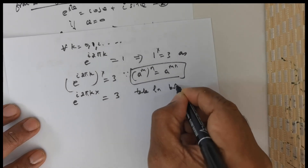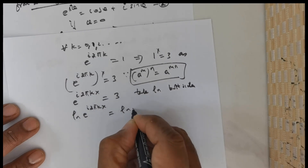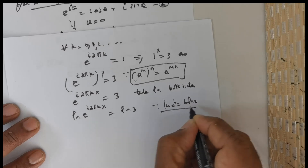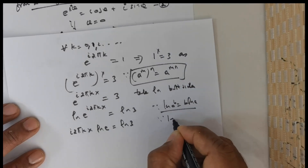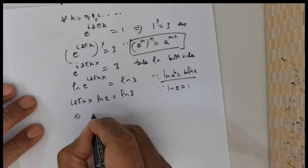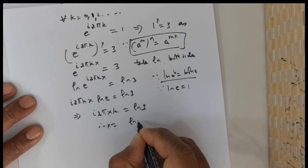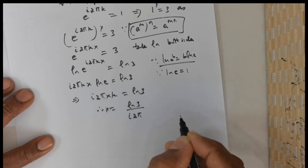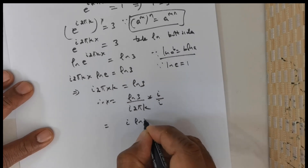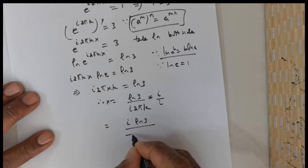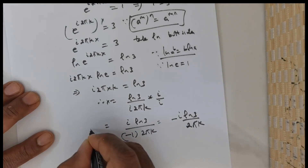Now we take ln both sides. This will give me ln of e raised to the power of i times 2 times pi times k times x is equal to ln 3. Since ln of a raised to the power of b is equal to b times ln a, this is going to be i times 2 times pi times k times x times ln e is equal to ln 3. Now ln e is equal to 1, so i times 2 times pi times k times x is equal to ln 3. Therefore x is equal to ln 3 divided by i times 2 times pi times k. I don't want i in the denominator, so I multiply by i and divide by i. This gives me i times ln 3 divided by i squared. Since i squared is negative 1, this becomes negative i times ln 3 divided by 2 times pi times k.